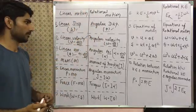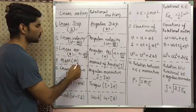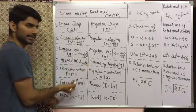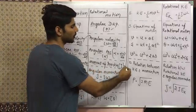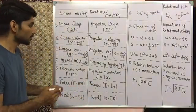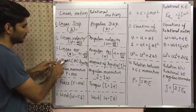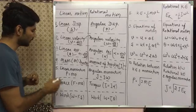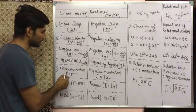The fourth point: in linear motion we have mass, or inertia. In rotational motion we have the moment of inertia, denoted by capital 'I'. The moment of inertia in rotational motion does the same job that mass does in linear motion.